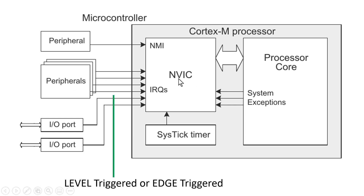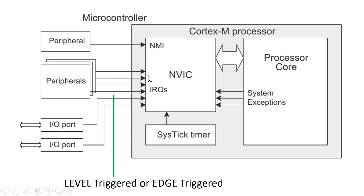The processor has to leave its normal execution flow. For example, if the processor is executing something, it has to leave it there, give attention to the peripheral, and execute the task requested by the peripheral using the interrupt line. Once this interrupt is served, the processor will come back to the normal execution flow where it left. This is a very brief introduction about interrupts and I am assuming all of you know the basics.